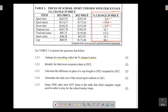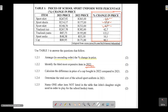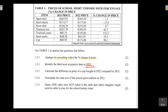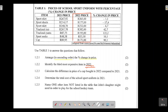Question 1.2.2 says: identify the third most expensive item in 2022. Focus your attention on what the question is asking — the third most expensive item in 2022. Go to the 2022 column, highlight it to focus your attention, then look at the items from the most expensive going down in descending order to determine the third most expensive.